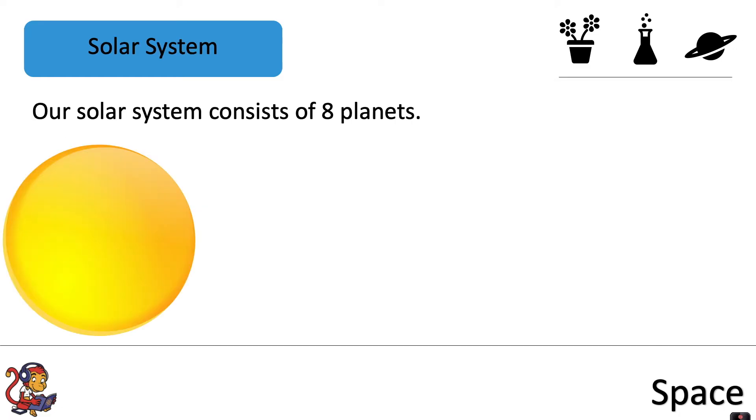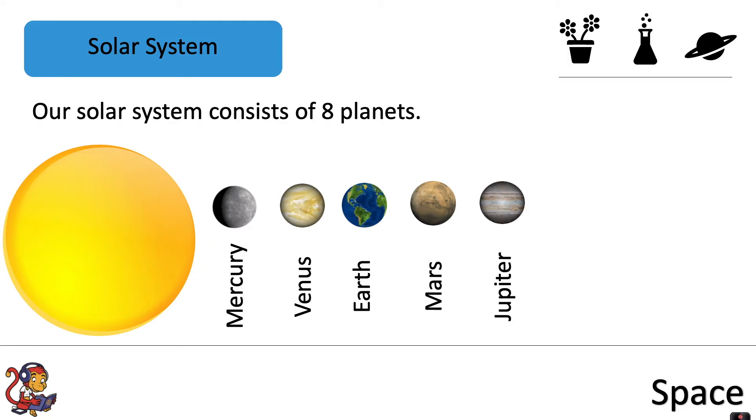Our solar system consists of eight planets: Mercury, Venus, Earth, Mars, Jupiter, Saturn, Uranus and Neptune. Pluto used to be considered a planet in the solar system but now that's been downgraded to a dwarf planet so we don't include it in our list anymore.